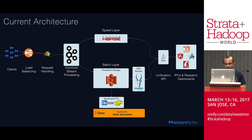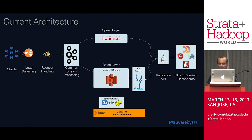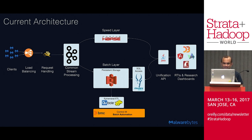We wanted to embrace ephemeral clusters, so we partnered with a company called Cubo, which helps us spin up and spin down clusters so we only have them for the time we need, keeping our costs down. We have ephemeral clusters that do our computing depending on volume and data nature. All of this is underpinned using BMC Control-M batch automation, which gives us capability to manage our SLAs and predict whether our jobs are going to complete on time or not.